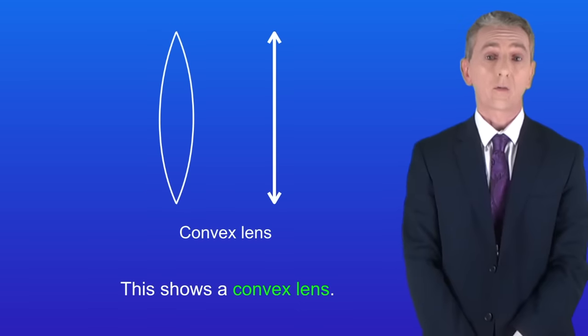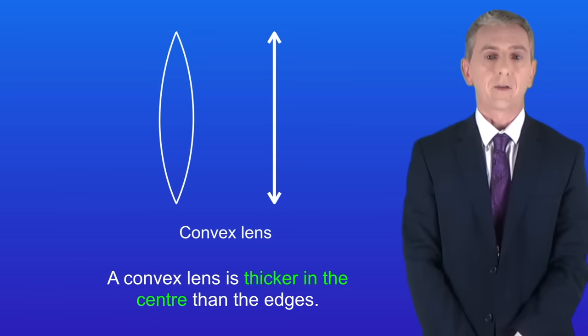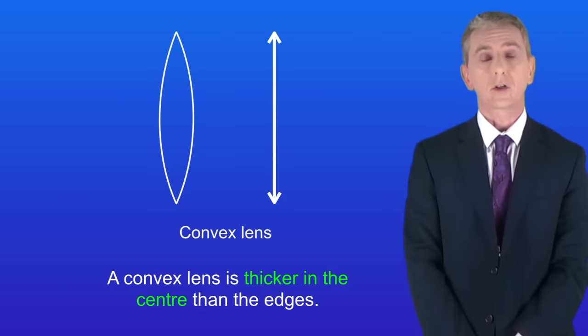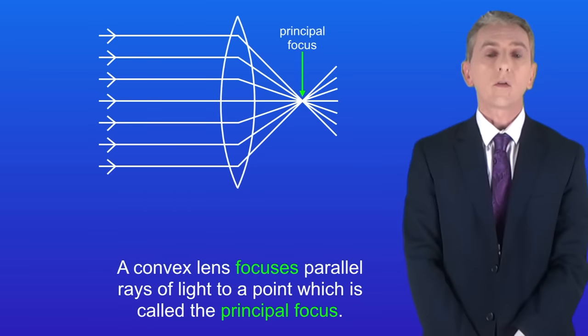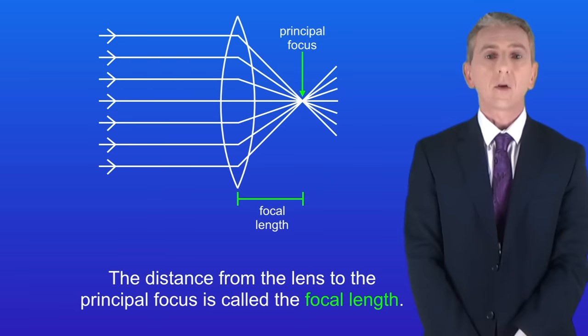In the last two videos we've been looking at convex lenses, and I'm showing you here a picture of a convex lens and the symbol. Remember that a convex lens is thicker in the center than the edges. We saw that a convex lens focuses parallel rays of light to a point, and that's called the principal focus, and the distance from the lens to the principal focus is called the focal length.